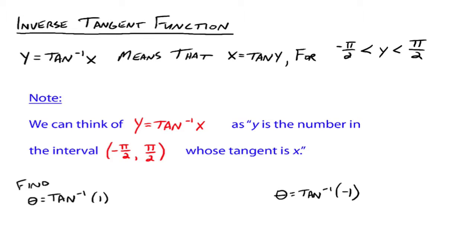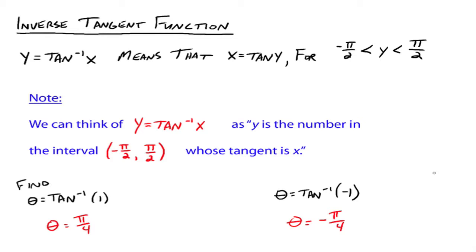y equals arc tangent of x means that x equals tangent of y, for y between negative pi over 2 and pi over 2. We can think of y equals arc tangent of x as: y is the number in the interval negative pi over 2 to pi over 2 whose tangent is x. For example, theta equals the arc tangent of 1 — what number between negative pi over 2 and pi over 2 has a tangent equal to 1? That would be theta equals pi over 4, where sine and cosine are the same. And arc tangent of negative 1 gives theta equals negative pi over 4, since we're in quadrants 1 and 4 and must use negative angles.